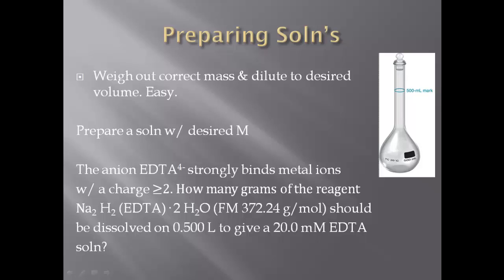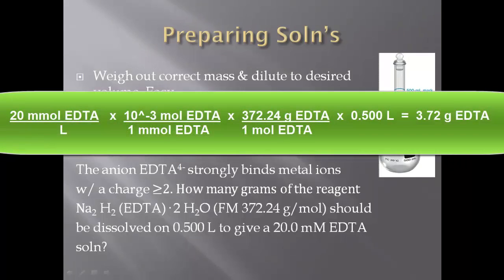So I would start out with your 20 millimolar, because that's what they want — the final concentration. So 20 millimolar really means 20 millimoles per liter. I would go ahead and convert that to moles: there's 10 to the negative 3 moles in 1 millimole of EDTA. And then I would convert the moles to grams — so in 1 mole of EDTA, there's 372.24 grams of EDTA.